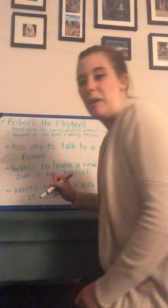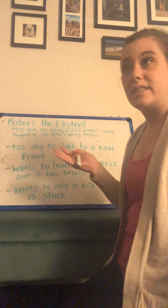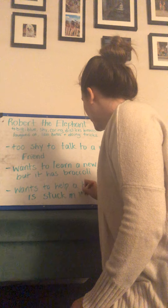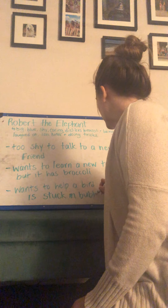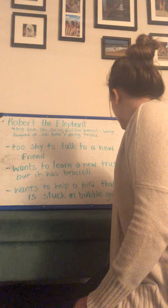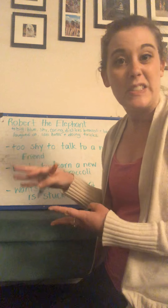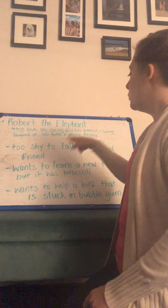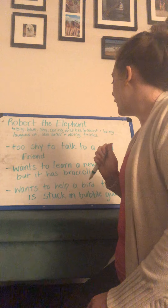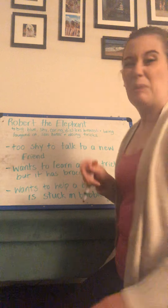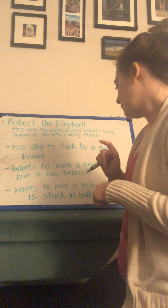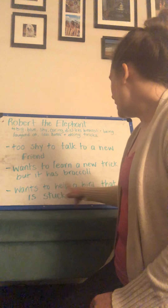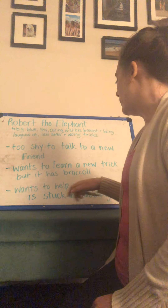Now that I'm thinking about it, it's kind of tough for a bird to get stuck in a tree, so maybe I would say that a bird is stuck in bubblegum. You know how birds have little tiny feet — maybe the bird was walking, got stuck in bubblegum, and now he needs Robert to help him. So here are three problems I invented: one, he's too shy to talk to a new friend; two, he wants to learn a new trick but it has broccoli in it; and three, he wants to help a bird that's stuck in bubblegum but he's not sure how.